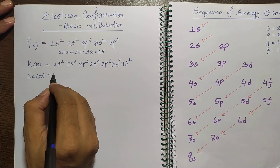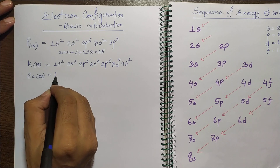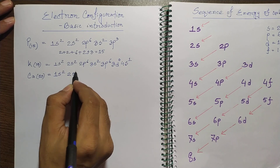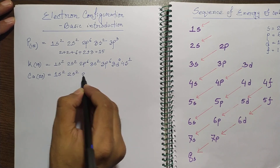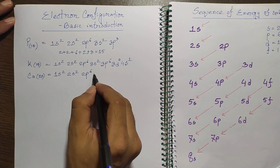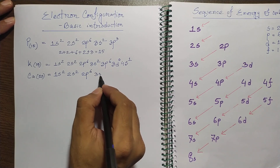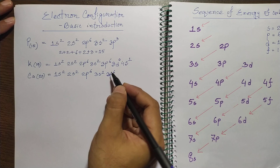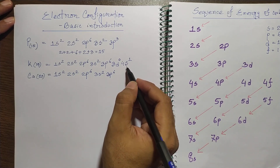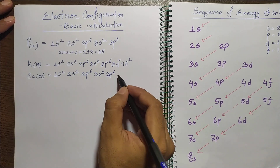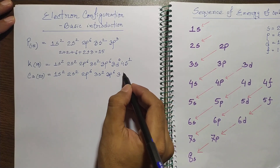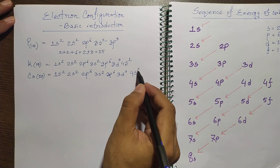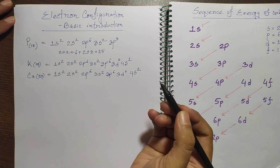Think about calcium, which is the next element after potassium. It would have one electron more, so: 1s2, 2s2, 2p6, 3s2, 3p6. Since an s orbital can hold 2 electrons, 3d would again be 0 and the 4s orbital would be 2, giving 4s2. This is the electron configuration of calcium.